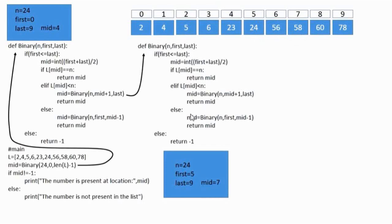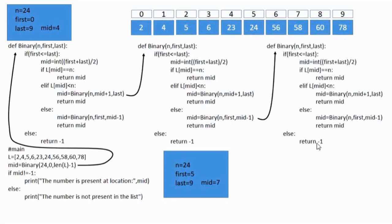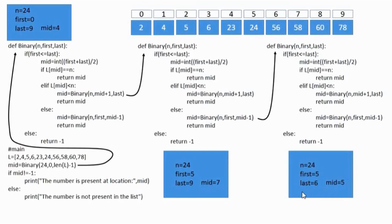Another copy of the function is generated. The arguments passed are n = 24, first = 5 (unchanged), and last = mid minus 1 = 7 minus 1 = 6. The if statement checks first ≤ last: 5 ≤ 6 is true. Mid is calculated as 5 plus 6 = 11 divided by 2 = 5.5, taking the integer part gives mid = 5. The element at position 5 is 24, which equals n = 24, so the condition is true. The value of mid (5) is returned to the previous call.